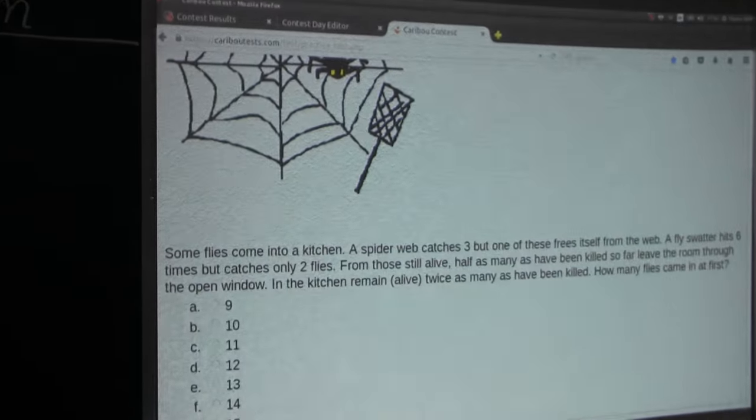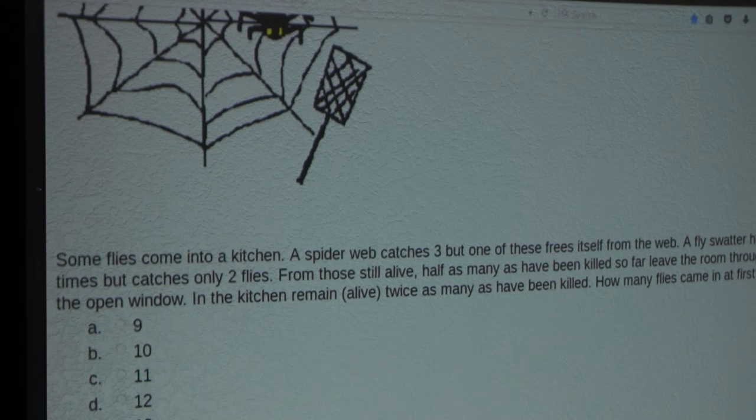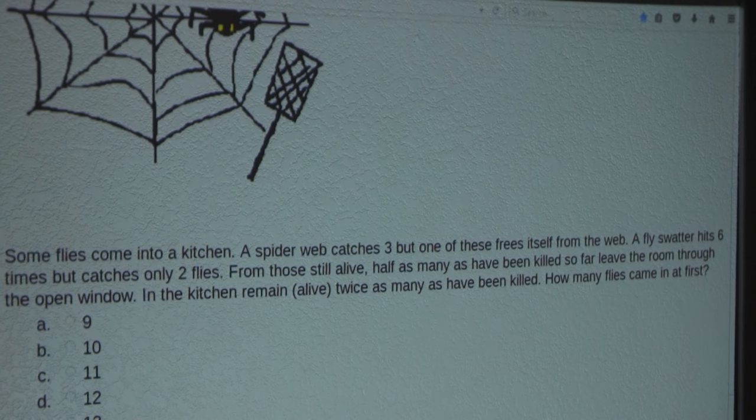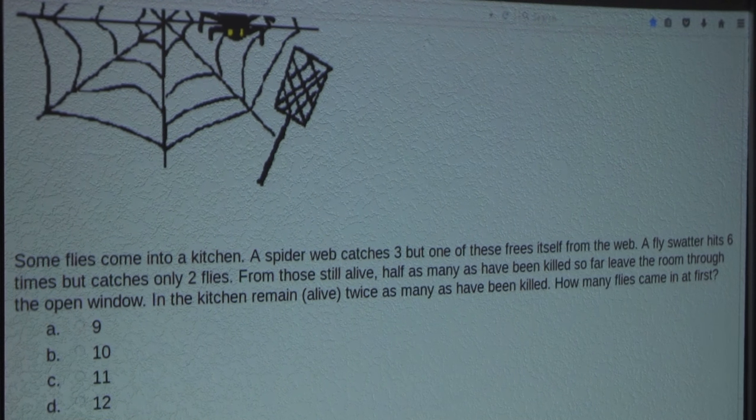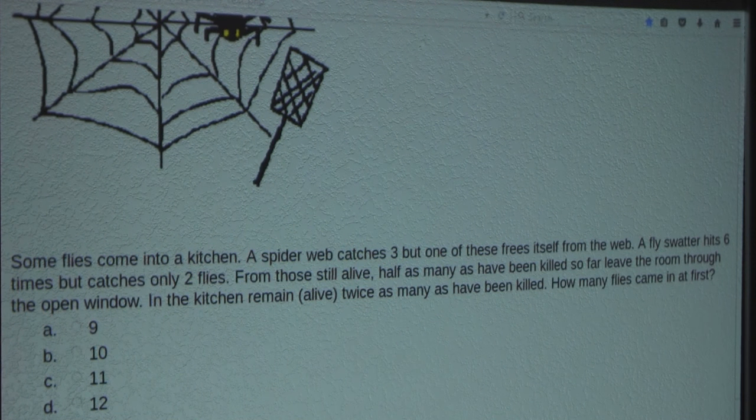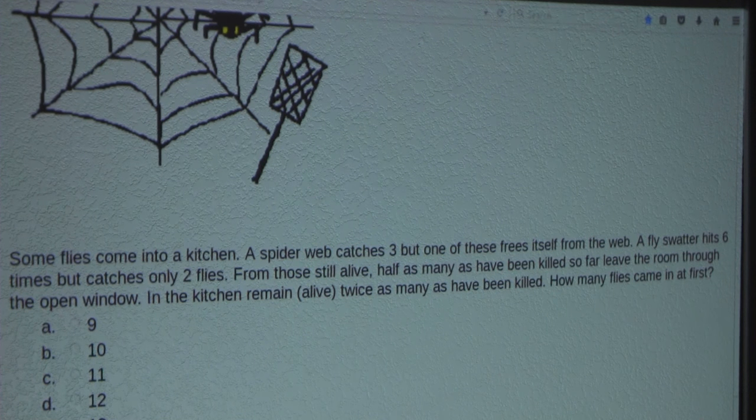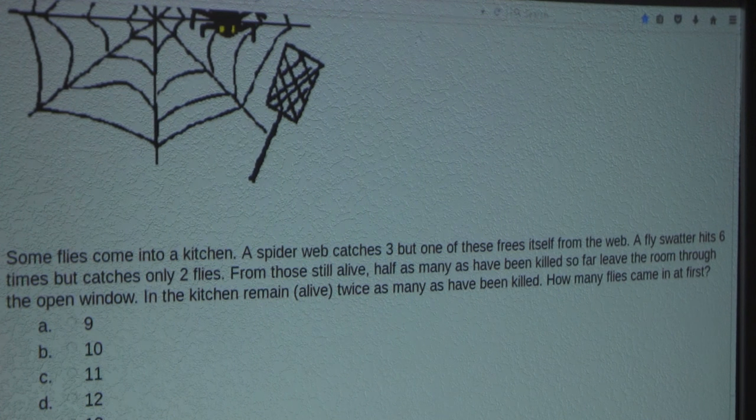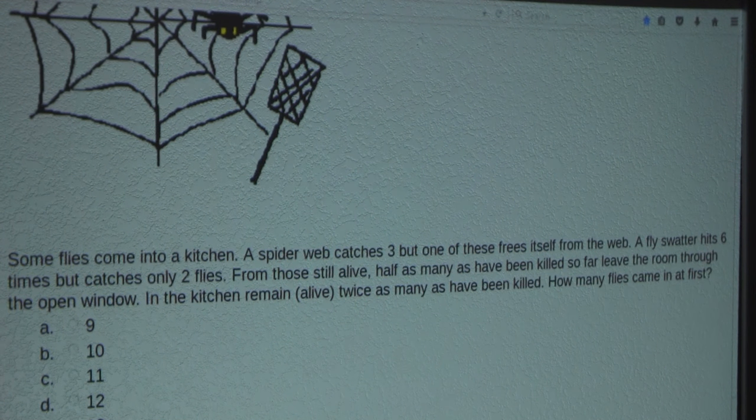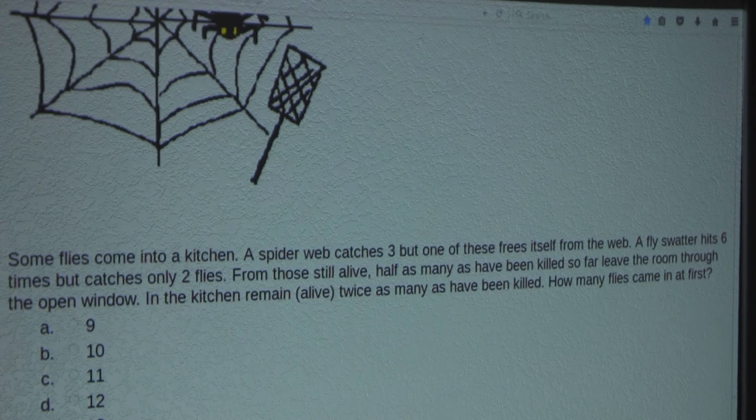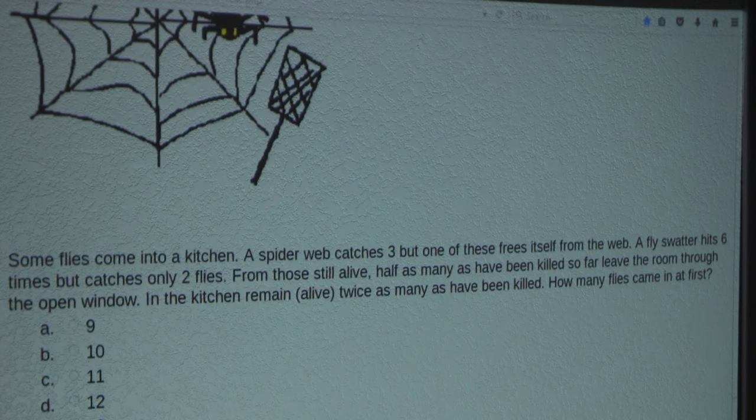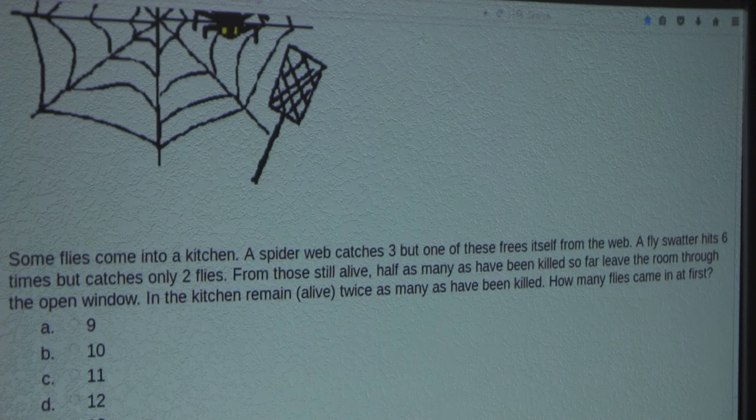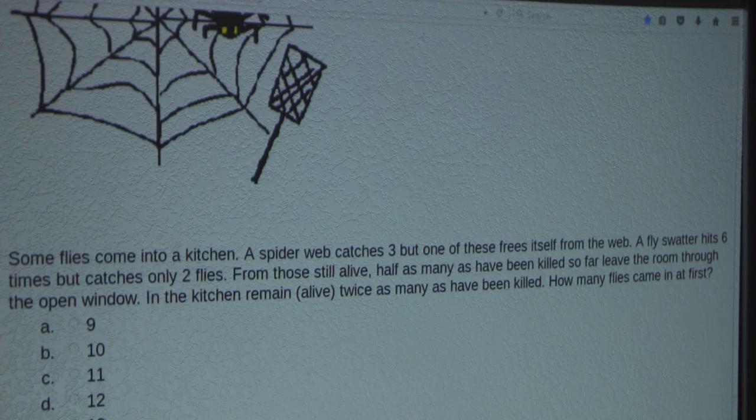So, the question is: Some flies come into a kitchen. A spider web catches three, but one of these frees itself from the web. A fly swatter hits six times, but catches only two flies. From those still alive, half as many as have been killed so far leave the room through the open window. In the kitchen remain alive, twice as many as have been killed. How many flies came in at first?